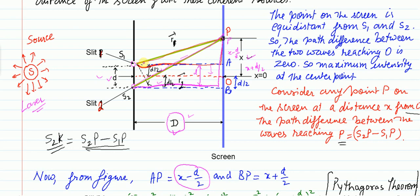The purpose of this diagram is to find the path difference between the two light rays S1P and S2P. To do this, we draw a perpendicular from S1 onto S2P. The foot of that perpendicular is point K, so S2K is the path difference between the two light rays — that is, S2P minus S1P. Our aim is to find this using the geometrical structure.